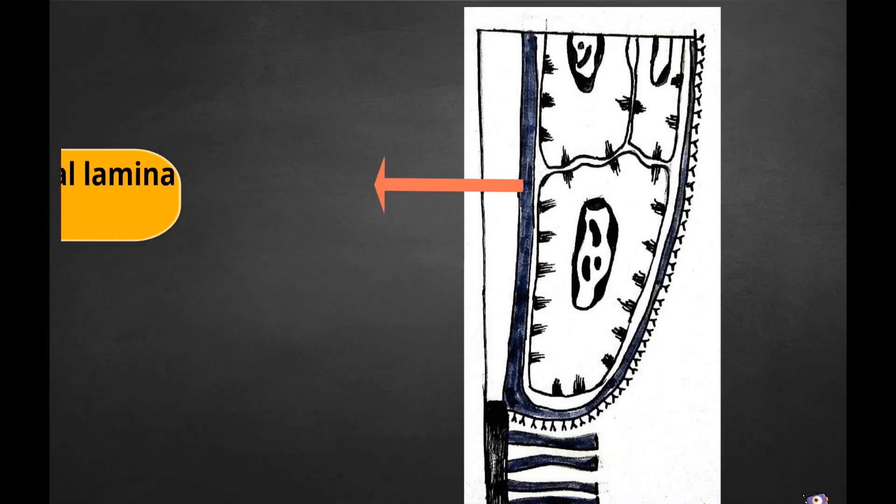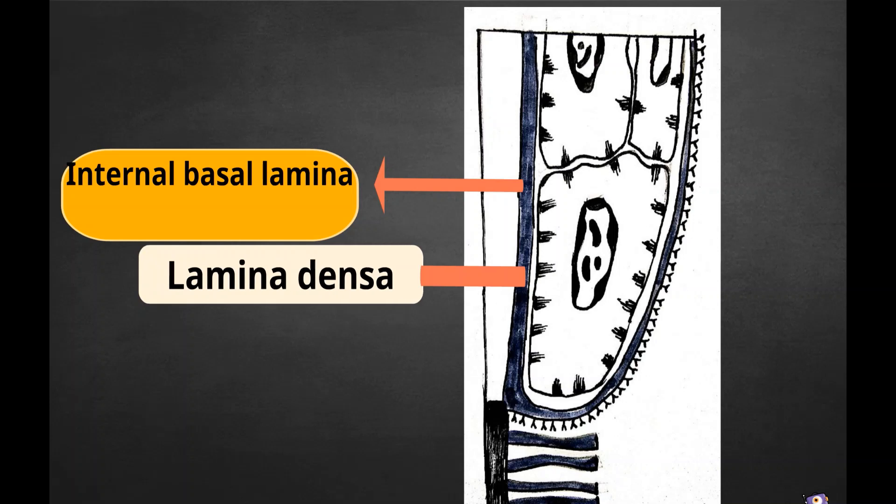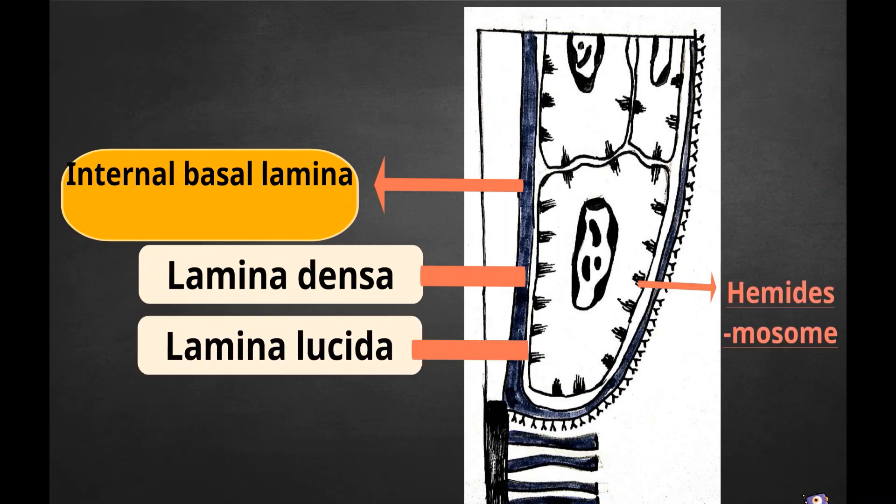The internal basal lamina consists of a lamina densa adjacent to the enamel and a lamina lucida to which hemidesmosomes are attached. Hemidesmosomes have a decisive role in the firm attachment of the cells to the internal basal lamina on the tooth surface.